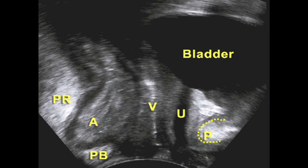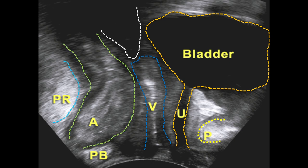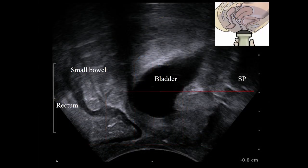Symphysis pubis, bladder, vagina in the middle, anorectal junction, puborectalis behind. You do this at rest, then trace a line and ask your patient to do a Valsalva maneuver — to push down — to see the displacement of the pelvic organs below this line. And you can see some form of prolapse, like in this lady with multi-compartmental prolapse.